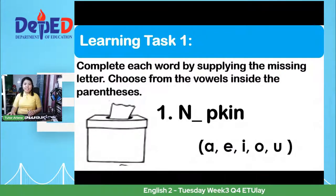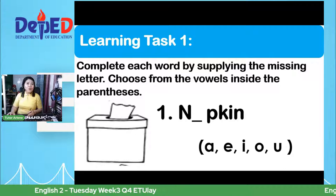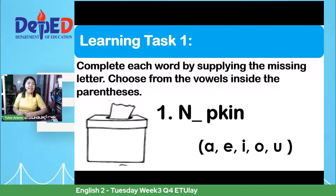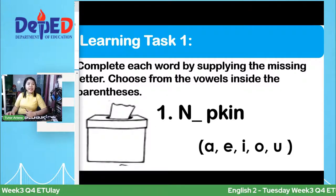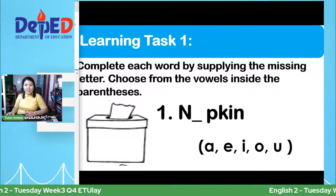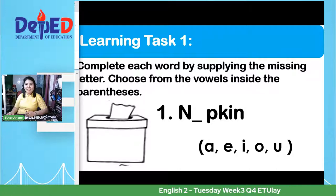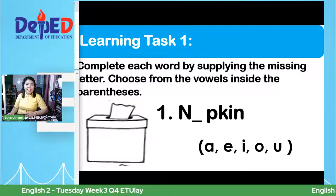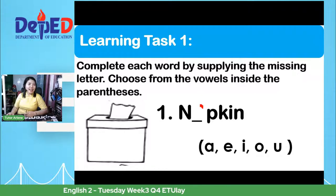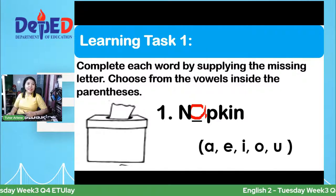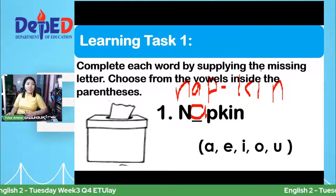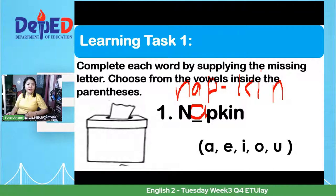For Learning Task 1, we are going to complete each word by supplying the missing letter. Choose from the vowels inside the parentheses. What is the name of this picture? Sabi ni Neri: napkin. Yes! So we have two syllables. The missing letter is letter A. Napkin: nap-kin — two syllables. But in your self-learning module, it is only asking about the missing letter, so lagay lang ninyo letter A.